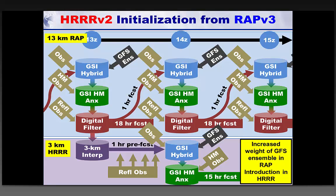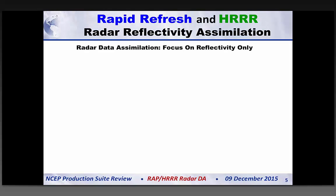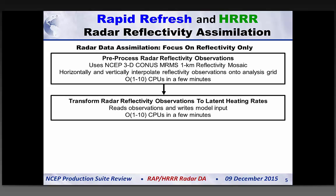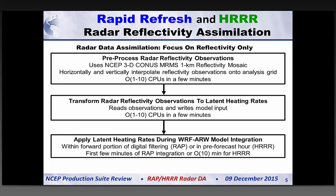I'll focus on this latent heating forcing function approach in both the HRRR and the Rapid Refresh. The three steps are: pre-process radar reflectivity observations from the MRMS reflectivity mosaic, which is a fast interpolation onto the model analysis grid; transform those observations into latent heating rates; then apply those heating rates during some portion of model integration — during the forward portion of digital filtering in the RAP, or during the pre-forecast hour in the HRRR. This is all computationally very inexpensive.